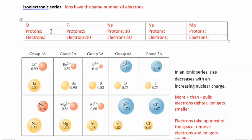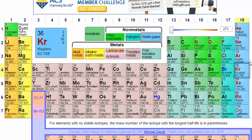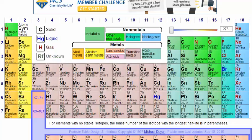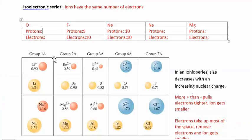If you look at where oxygen is in the periodic table, oxygen is right next to fluorine — it has 8 protons and 8 electrons. So if it has 8 protons and gains 2 electrons, it goes from 8 electrons to 10 electrons, and it will be isoelectronic with these as well.